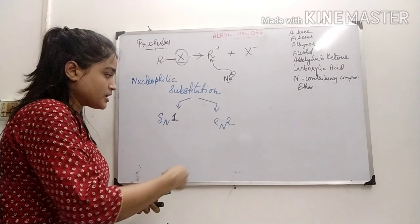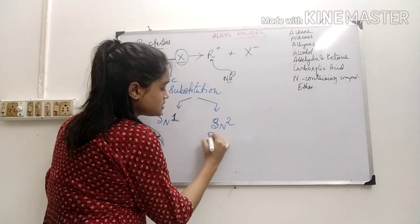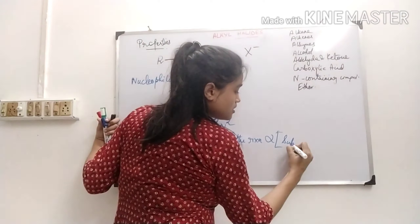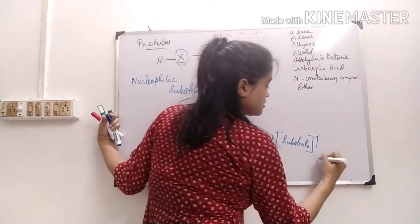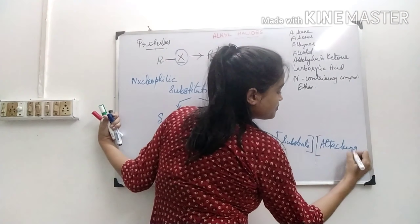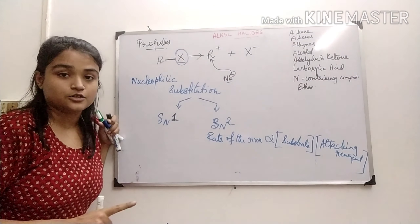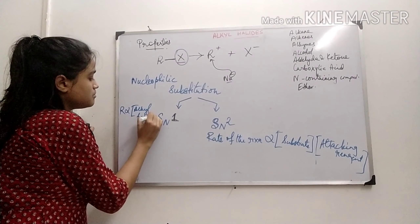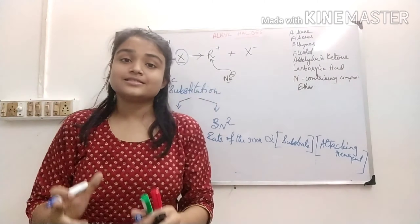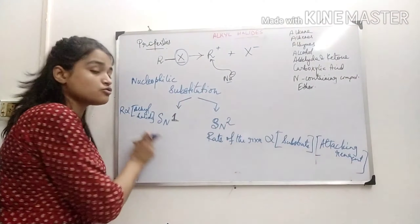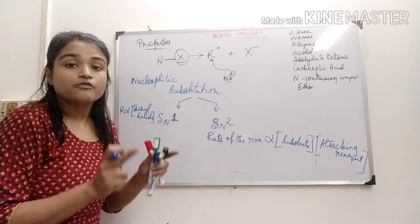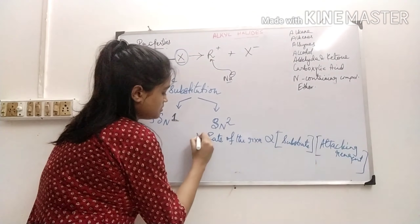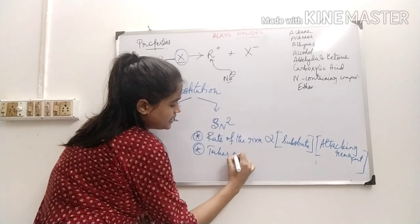In SN2 mechanism, the rate of the reaction is directly proportional to the concentration of both the substrate (the alkyl halide) and the attacking reagent (the nucleophile). In SN2, there is no carbocation intermediate formed. It takes place in a single step.